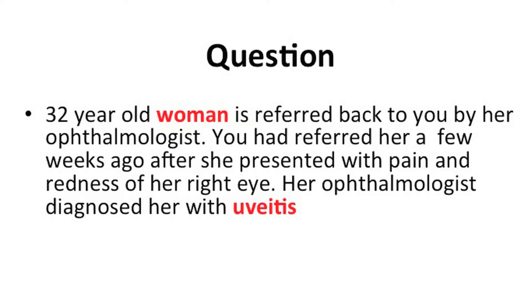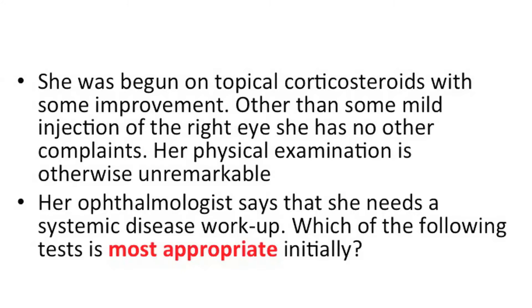A 32-year-old woman is referred back to you by her ophthalmologist. A few weeks ago she presented with pain and redness of her right eye and was diagnosed with uveitis. Anytime they tell you the diagnosis in the question, that's not a good thing. She was begun on topical corticosteroids with some improvement. Other than mild injection of her right eye, she has no other complaints, and her physical exam is otherwise unremarkable. Her ophthalmologist says she needs a systemic disease workup. Which of the following is most appropriate initially — and the key word is initially?